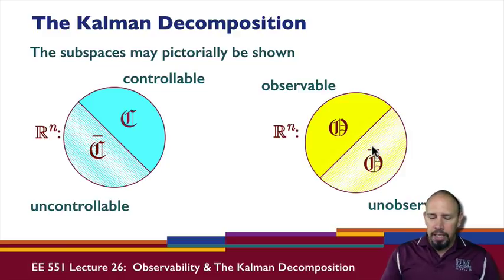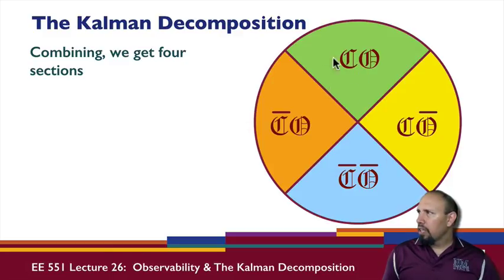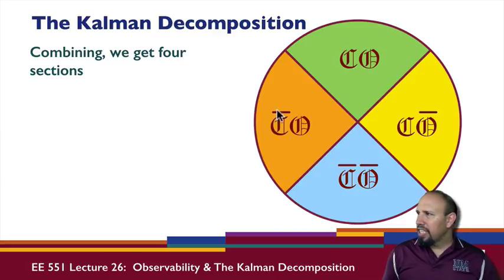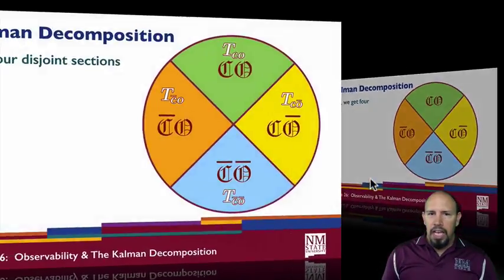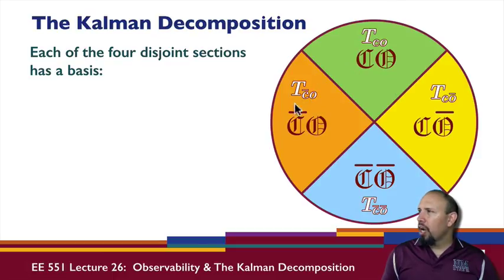Since they're independent properties, we can combine them and get four different sections. One subspace is both controllable and observable. Another is not controllable but is observable. A third is controllable but not observable. The fourth is neither controllable nor observable. Each of these four sections has a basis — for example, T_CO is the basis for the controllable-observable subspace, T_CbarO is the basis for the next subspace, and so on.